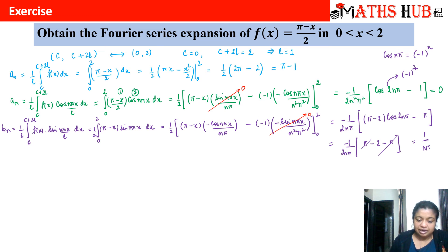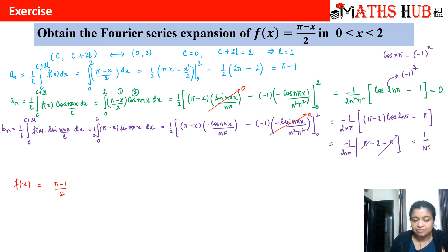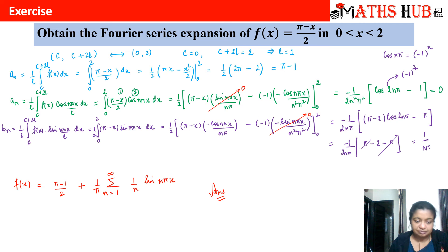So finally, the Fourier series expansion is: f(x) = a₀/2 + Σ bₙ·sin(nπx). With a₀ = π - 1 and aₙ = 0 and bₙ = 1/(nπ), the answer is f(x) = (π - 1)/2 + (1/π) Σₙ₌₁^∞ (1/n)·sin(nπx).